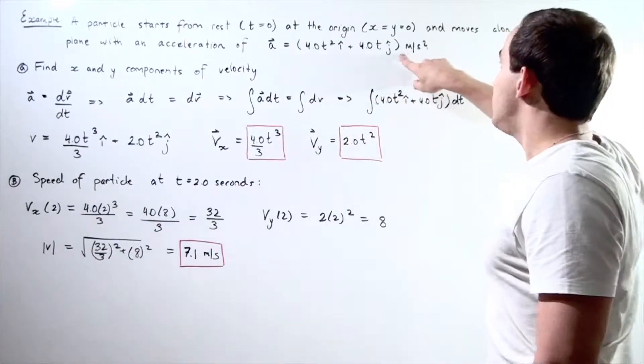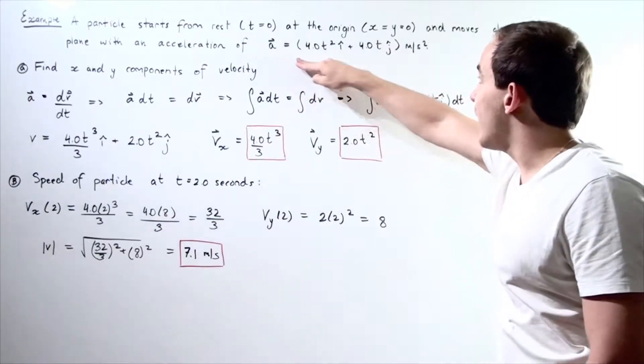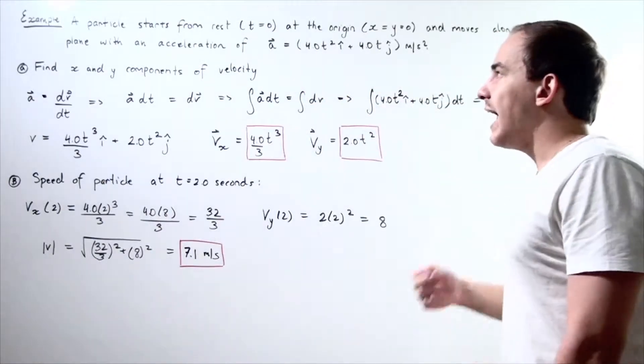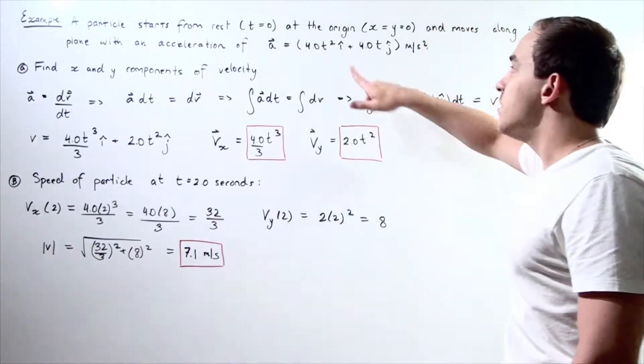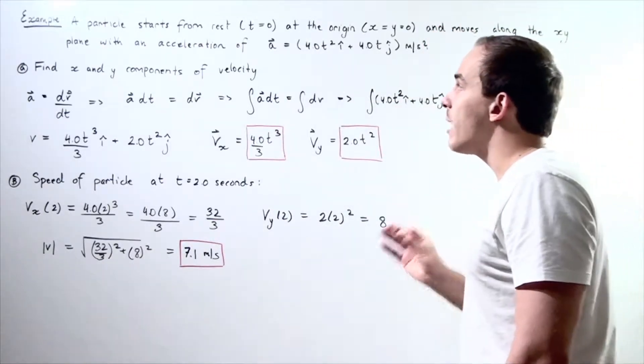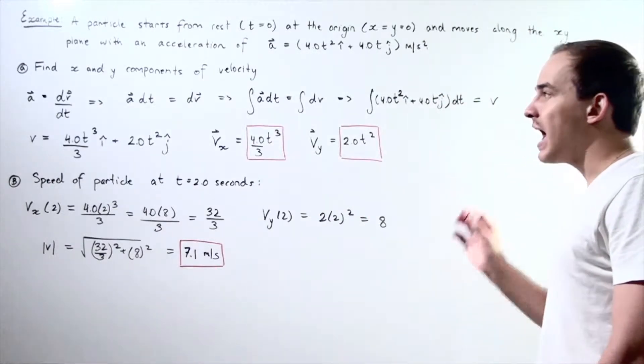So the units are meters per second squared. Now, what this equation gives me is at any given moment in time, I can plug in a time value, and this equation will give me what my acceleration vector is at that given moment in time.